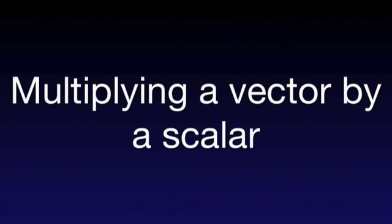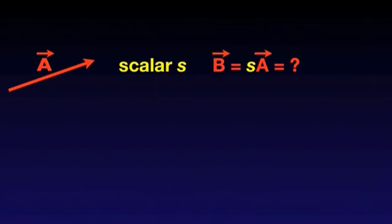However, it is possible to multiply a vector by a scalar. Let's consider a vector A and a scalar S. The resultant of multiplying the vector by a scalar is a new vector B that has the following properties: its magnitude is equal to the magnitude of A multiplied by S.